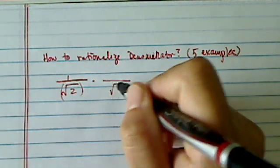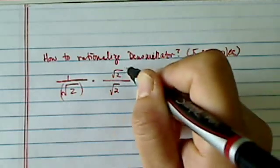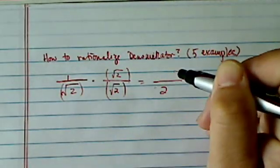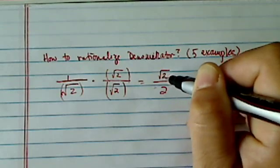So what we're going to do is multiply the radical two, top and the bottom, then bottom becomes two and the top becomes radical two.